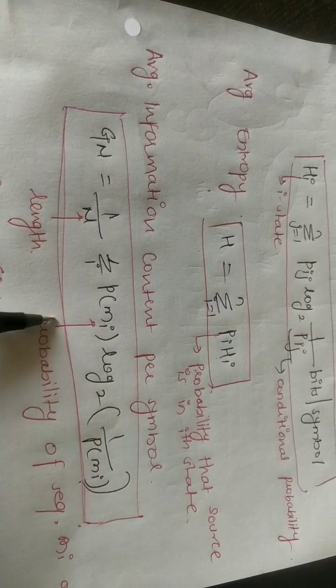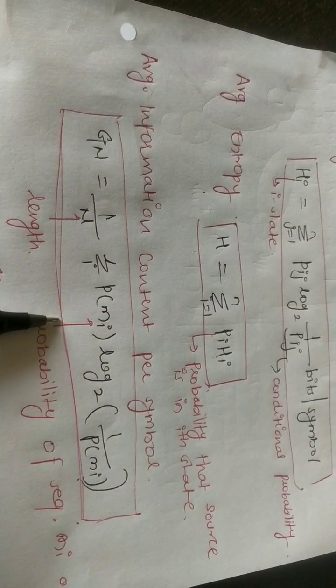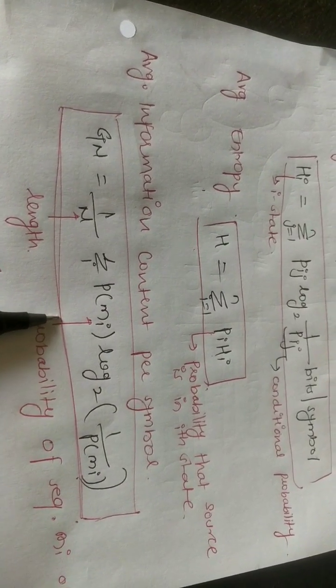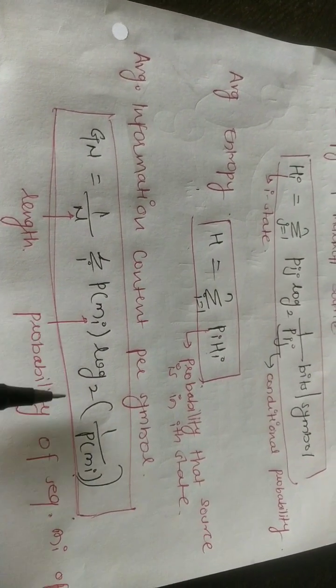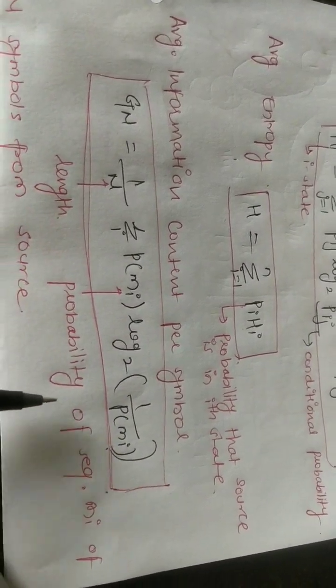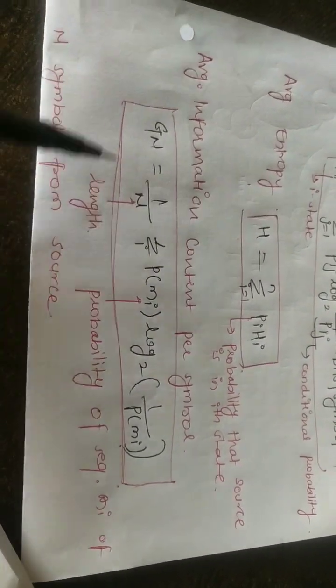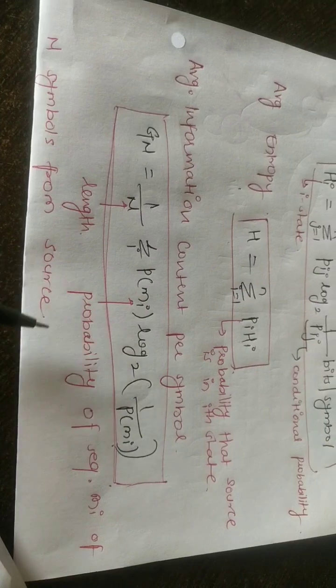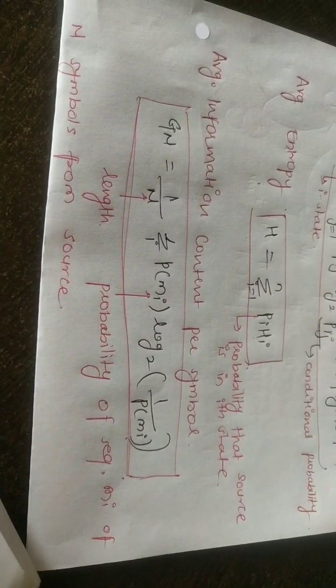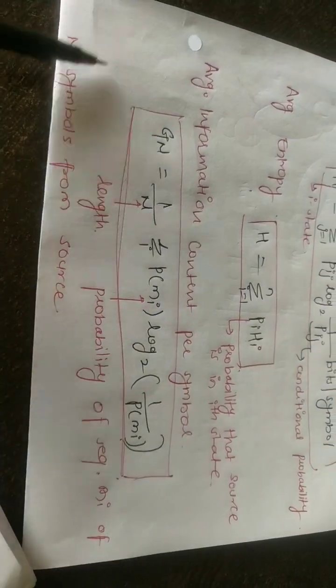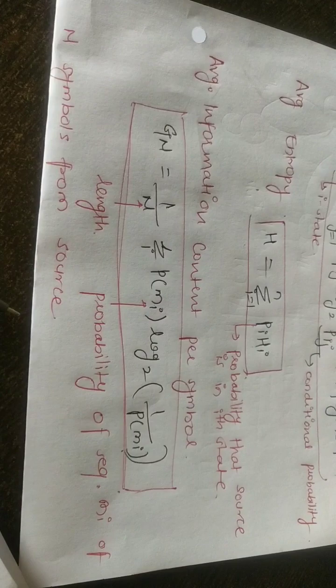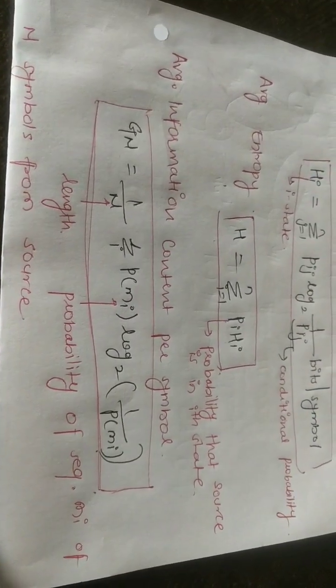The average information content per symbol G_n equals one over n, summation of p(m_i) log base two of one upon p(m_i), where n is the length and m_i is the probability of a sequence of n symbols from the source.